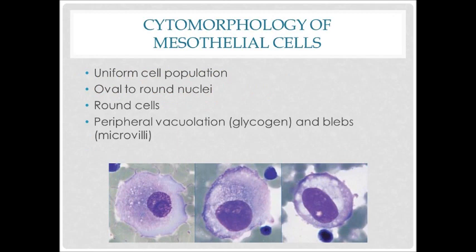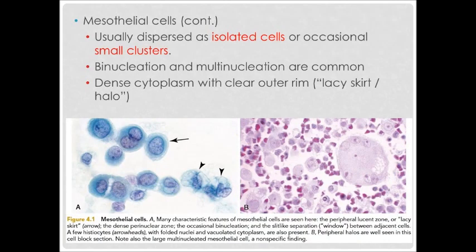Let's look at the cytomorphology of mesothelial cells. In normal conditions, the cells are uniform, have oval to round nuclei with round cells, and have peripheral vacuolation and blebs on the surface, which are microvilli. The cells are usually dispersed as isolated cells or occasionally in small clusters. They can also have binucleus and multinucleus. Sometimes a clear outer rim — known as lacy skirt or halo — in the cytoplasm can be seen.